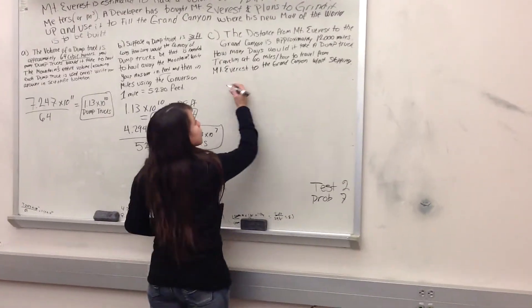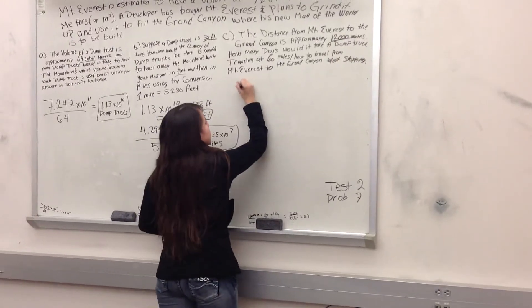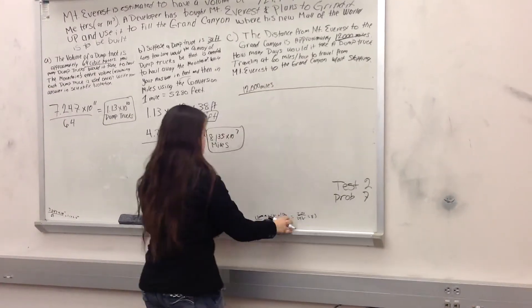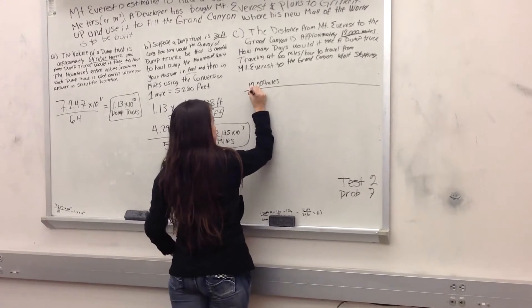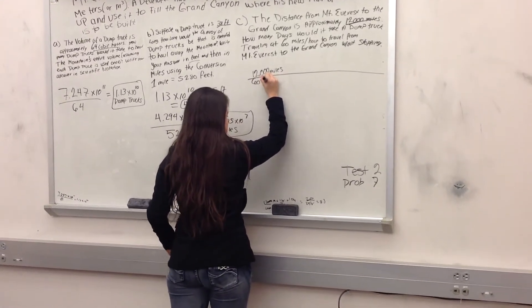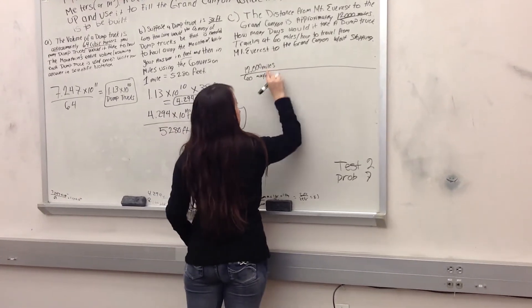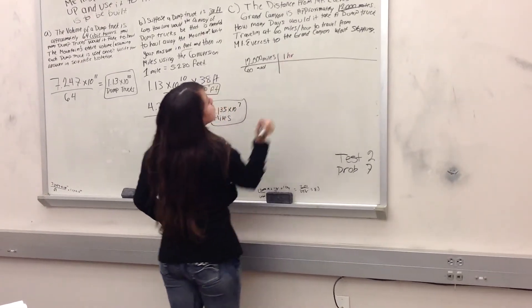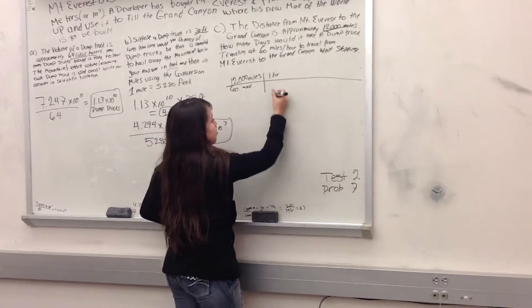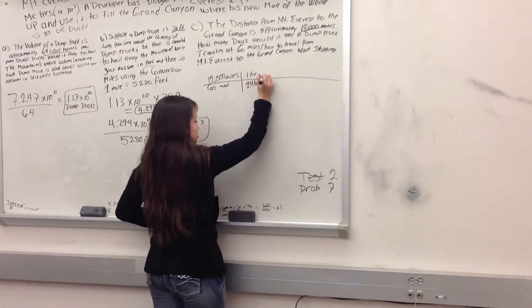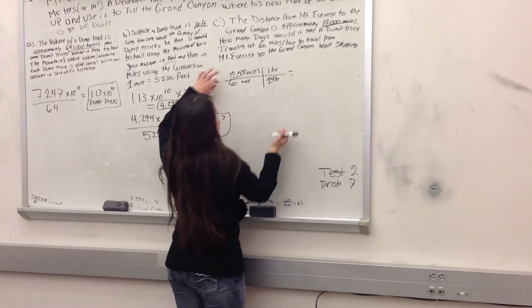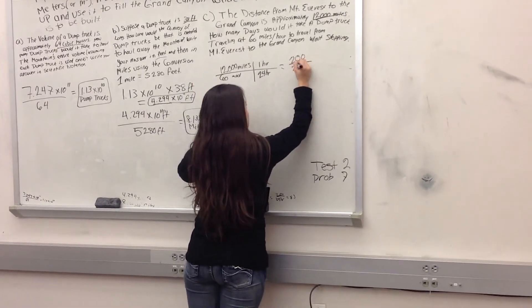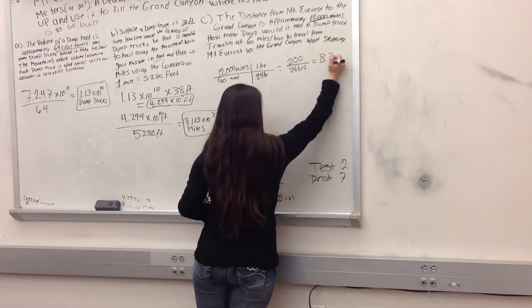So first, we are given 12,000 miles. And if the trucks are traveling 60 miles per hour for 24 hours, which is one day, we substitute this: 12,000 divided by 60 times 24 hours equals 8.3 days.